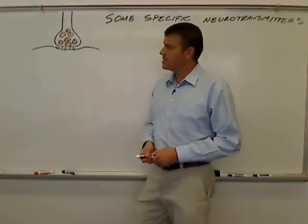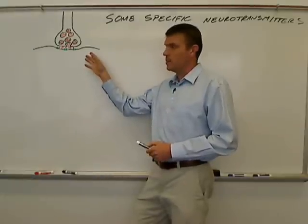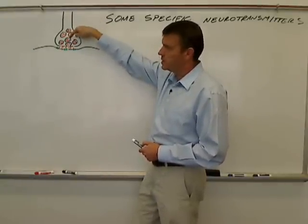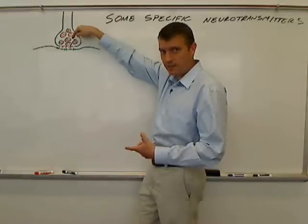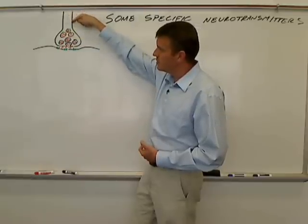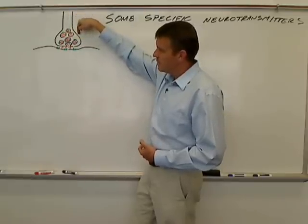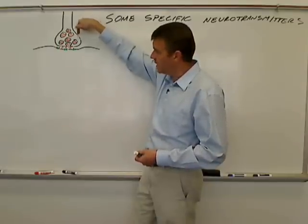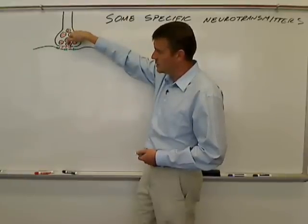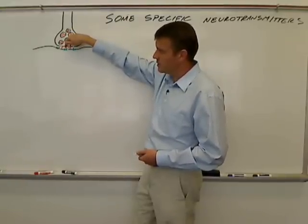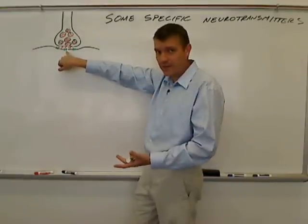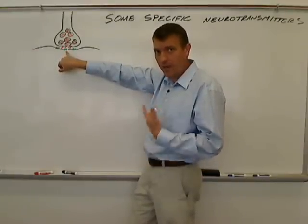If you recall from our last video dealing with synaptic communication, we have a presynaptic neuron, presynaptic membrane, vesicles containing neurotransmitter, and the presynaptic axonal button. When communication is going to happen, an action potential comes down, causes voltage-gated calcium channels to open, and calcium comes in and stimulates these vesicles to undergo exocytosis, releasing neurotransmitter into the synaptic cleft. The neurotransmitter then binds to these receptors, and we said what happens after that depends on the neurotransmitter and the receptor involved.